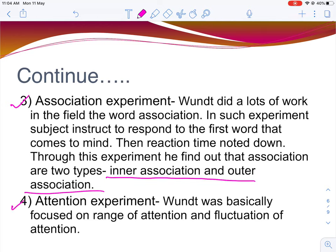Wundt also gave a deep contribution in the area of attention experiments. His focus was on how we perceive things clearly in relation to consciousness. He studied the range of attention — the span of attention and the fluctuation of attention — examining how many objects we can observe at one time and how our attention switches from one thing to another.